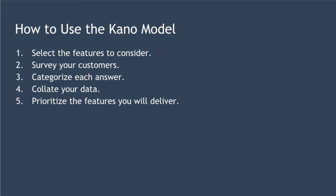Step one is to select the features to consider. You simply create a list of all the features you have under consideration to implement. That list could come from many sources — maybe your backlog, maybe requests from customers, maybe management or team brainstorming.